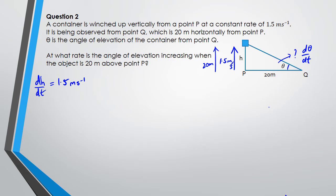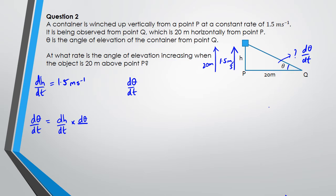Following the rates of change approach: we've been given dh/dt, and we're being asked for dθ/dt. We need to come up with another rate and work backwards. We're looking for dθ/dt and have been given dh/dt. We need to multiply by another rate to get dθ/dt, so I need dθ/dh — which means I need an equation relating θ and h.